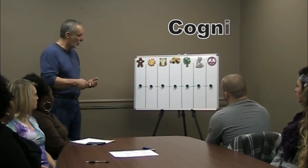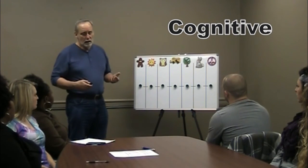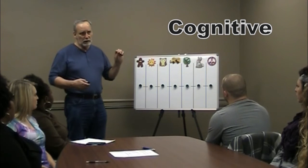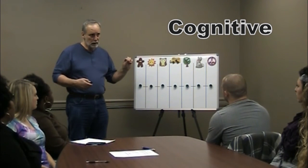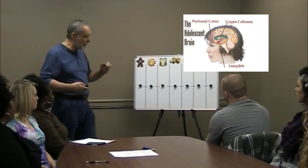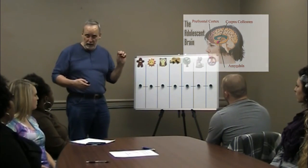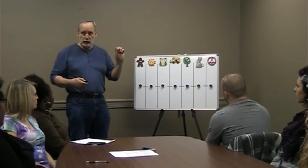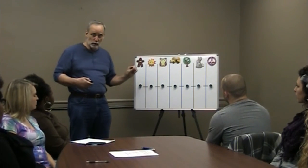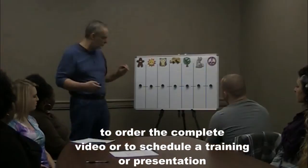Cognitive development has to do with the level of complexity in our thinking — can we solve difficult problems, can we do abstract thinking, can we think about concepts and apply them to the real world. That's our cognitive development.